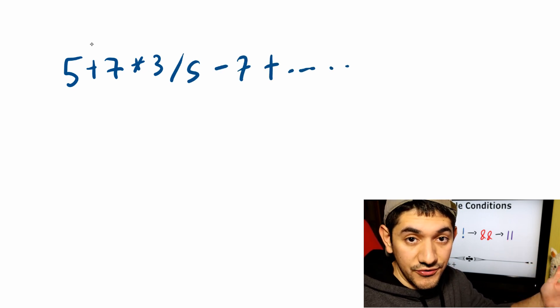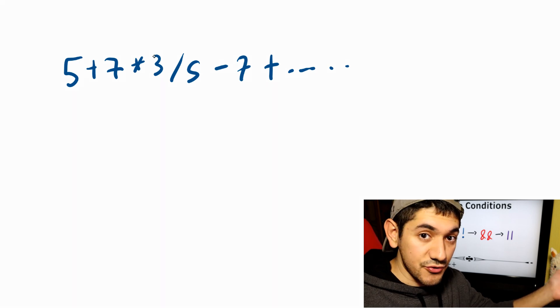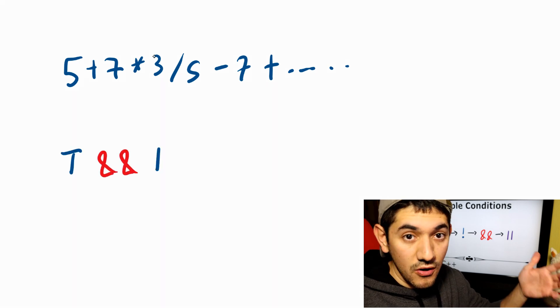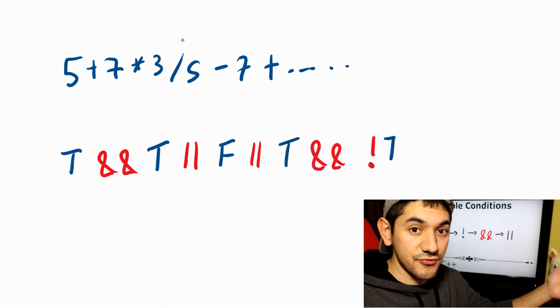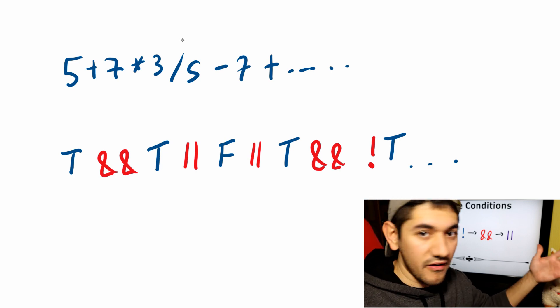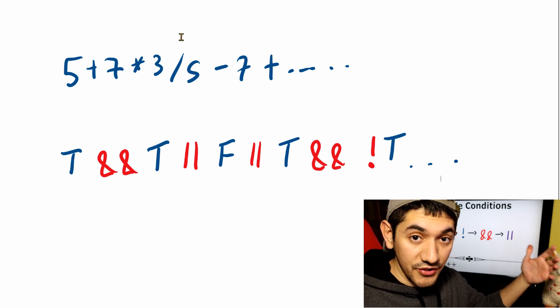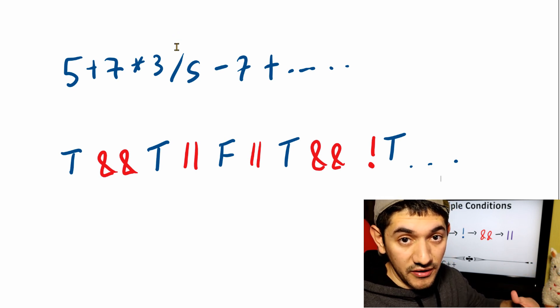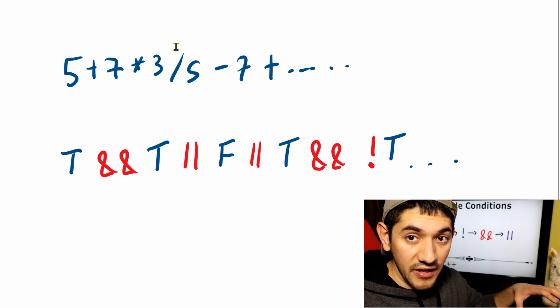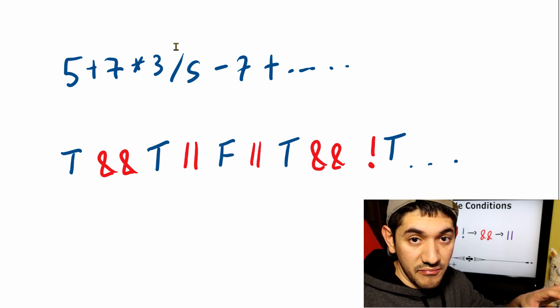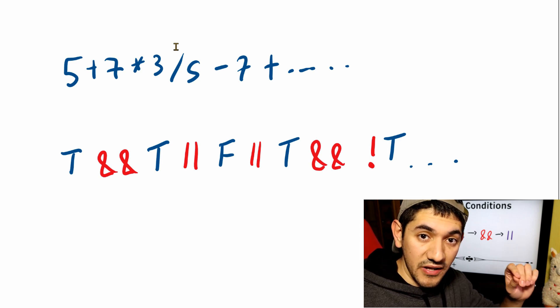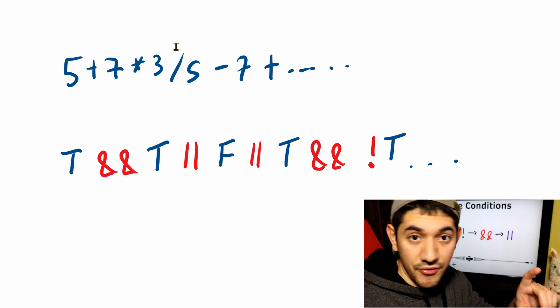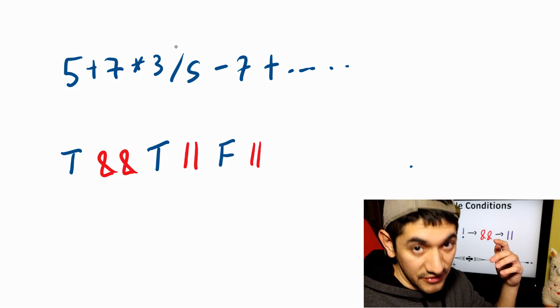This applies also to the conditional operators: true AND true OR false OR true AND true NOT true — I'm just making stuff up. The point is that we can combine them the same way. And just like the arithmetic operators, we had to take into account the order of operations. The conditional operators also have an order of operation that we have to follow.